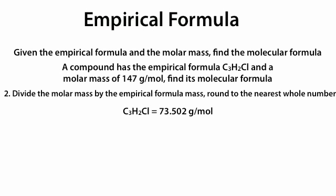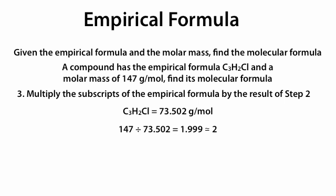Step 2: divide the molar mass by the empirical formula mass and round to the nearest whole number. We divide the molar mass of 147 by the empirical formula mass of 73.502, which comes out to 1.999 — rounding to the nearest whole number gives 2. Step 3: multiply the subscripts of the empirical formula by 2. Multiplying 3, 2, and 1 by 2 gives a final molecular formula of C₆H₄Cl₂.